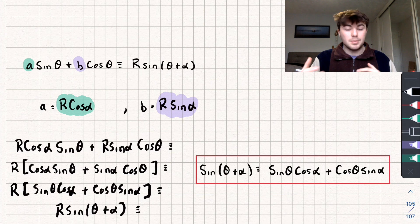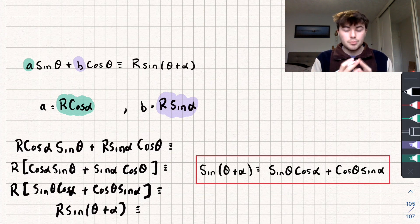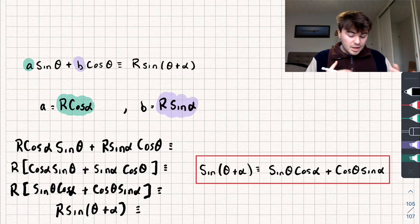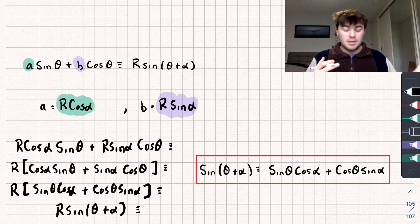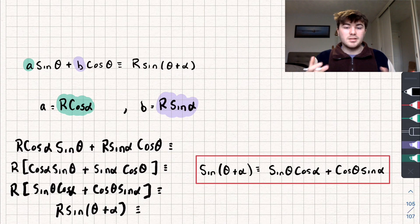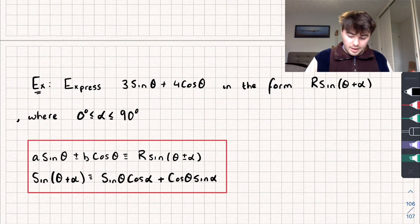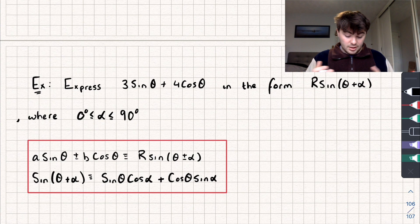A similar method can be used to show the other R addition formulas hold, such as A sinθ − B cosθ and so on. Essentially, any linear combination of sine theta and cosine theta can be expressed as a single term in sine or cosine.